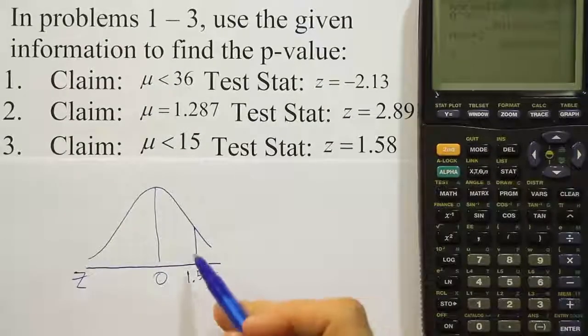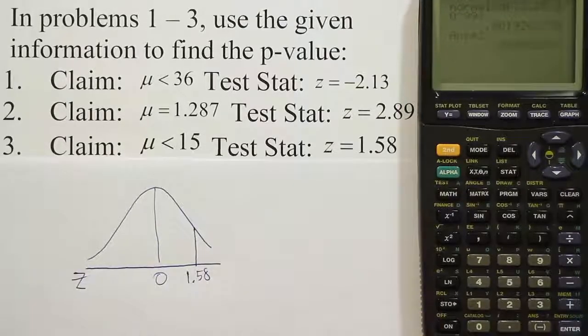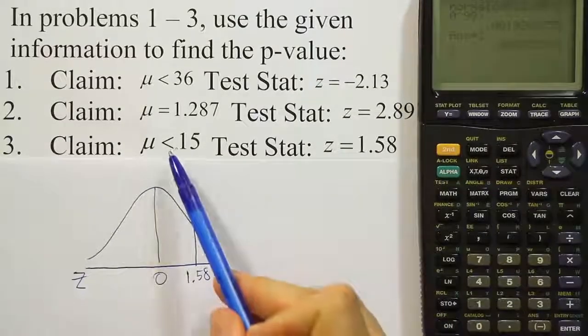See, the common mistake though is people will find the tail area on the right-hand side for this problem. Because they're so used to finding tail areas. But that's not correct because this is a left-tailed test.